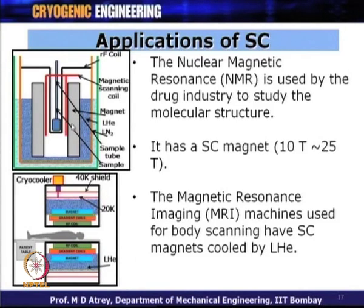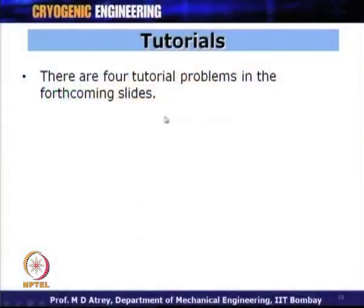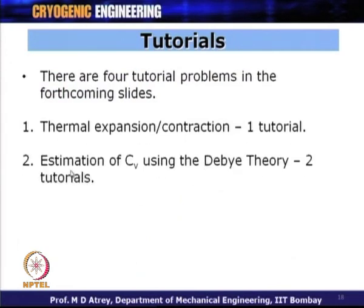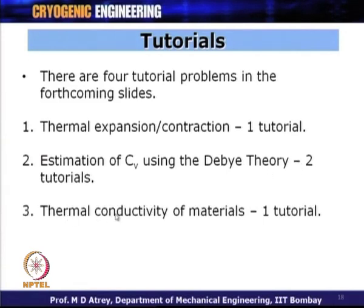In the remaining time, I will solve some tutorial problems. We have seen various properties, each with a way to calculate property variations at low temperature. There will be four tutorial problems: one on thermal expansion and contraction, two on estimation of specific heat using Debye theory, and one on thermal conductivity of materials at low temperature — calculating the value of K or heat loss due to K at low temperature.